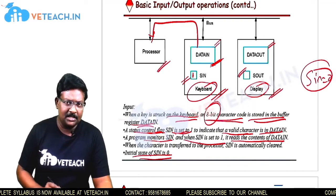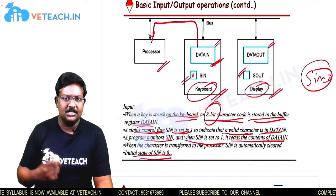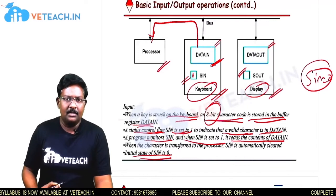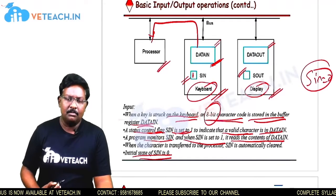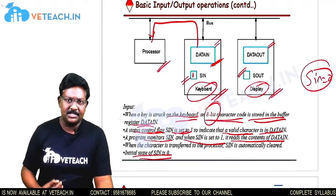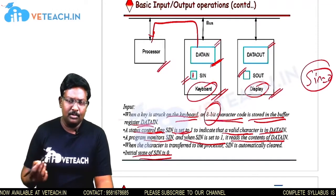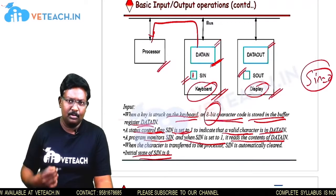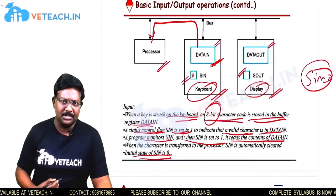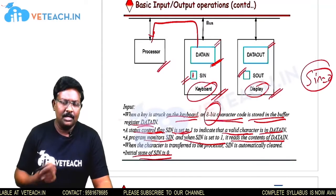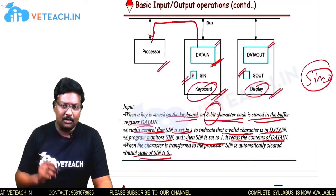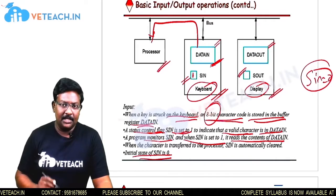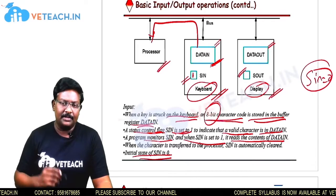Until SIN is equal to 1, we do not perform any input/output operation to the processor. This is what happens in the basic input operation.